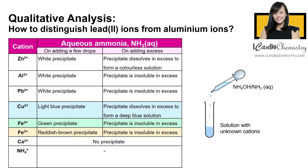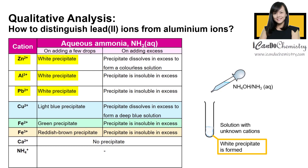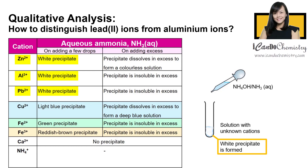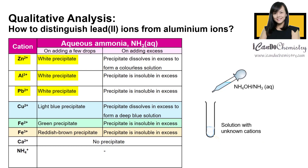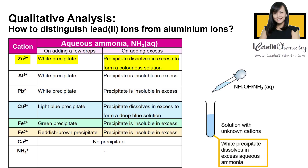So if we add aqueous ammonia into this unknown solution and a white precipitate is formed, then which cation must be present? Could it be zinc, could it be aluminium, or could it be lead-2? We can further add more aqueous ammonia to observe the changes. If the precipitate dissolves in excess aqueous ammonia to give a colourless solution, then we can confirm that the ion present must be zinc ion.